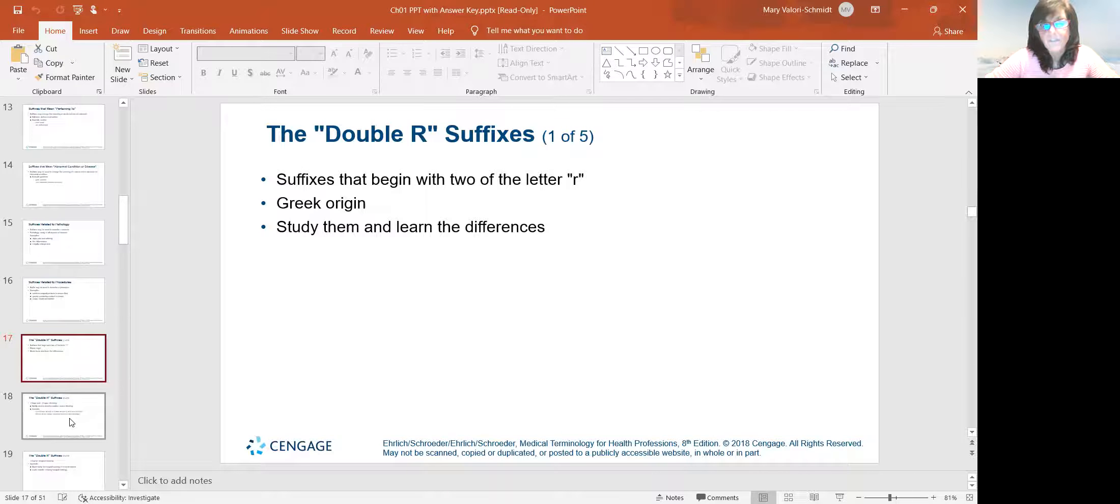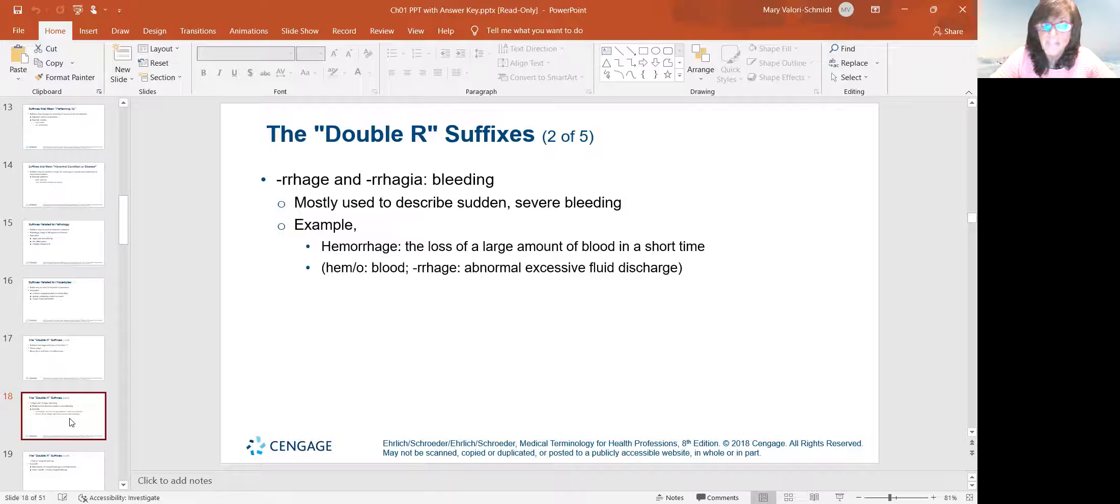Double R suffixes. They're Greek origin. And they're suffixes that begin with two of the letter R. It's pretty self-explanatory. It's like hemorrhage, rrhage and rrhagia, which means bleeding. So a hemorrhage is a sudden extreme loss of blood in a short period of time. Everyone's heard the word hemorrhage.